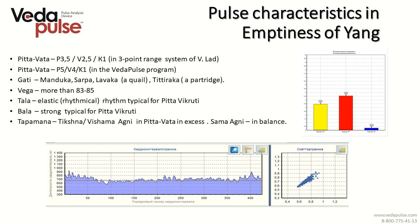People of Pitta-Vata type have a tendency to a high heart rate — higher than 80-85 beats per minute. Dominating Pitta makes the pulse elastic and rather strong; it can be felt through palpation — not as strong as in pure Pitta, but much stronger than the filamentary pulse of pure Vata type. The program will show that the digestion fire is in the range between Tikshna and Vishama: unstable fire typical for Vata Dosha and strong fire typical for Pitta Dosha. This state is seen only in imbalance; in harmony, Agni would be normal.